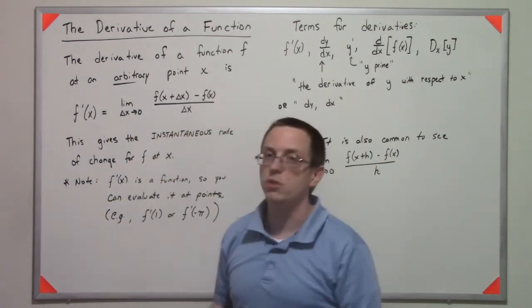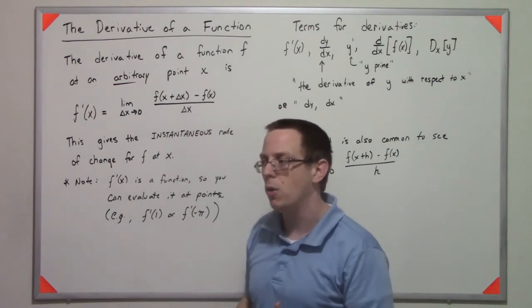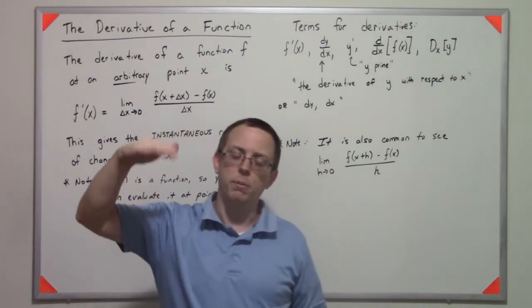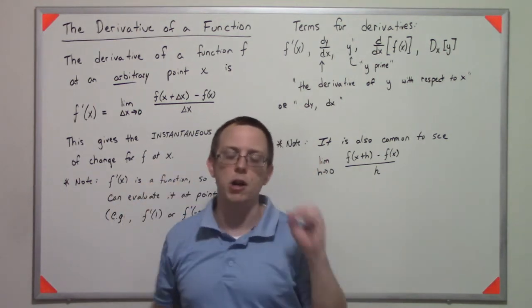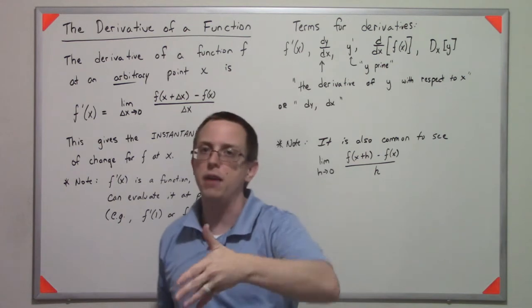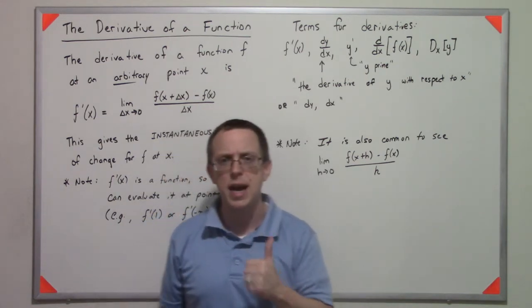What this allows us to do is find the instantaneous rate of change. So if I modeled your actual behavior by some sort of function, I could figure out how fast you're going at the first hour, or 55 minutes, or something like that. And that's the idea behind the derivative.